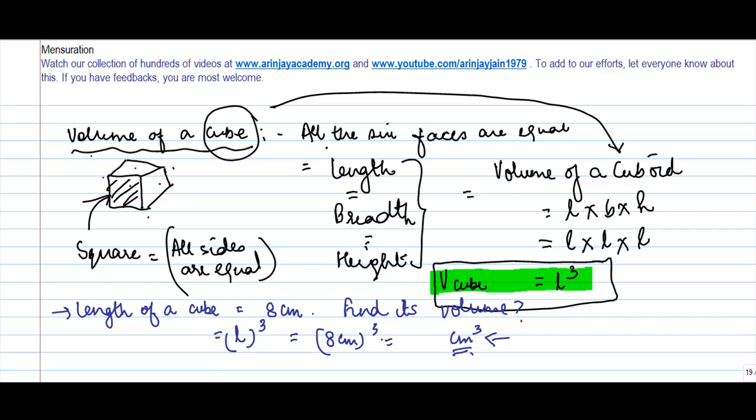And 8 into 8 into 8, or 64 into 8. 8 times 4 gives me 32, 3 carry. 8, 6 is 48 and 3, 512. 512 centimeter cube.